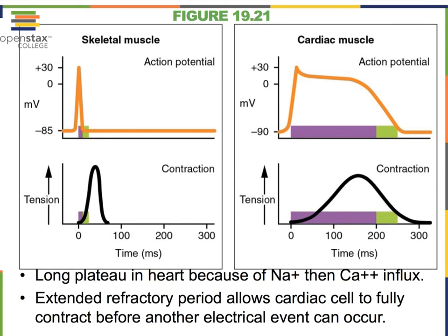In cardiac muscle cells, contraction occurs well in the middle of the action potential because calcium ions are provided not just by the sarcoplasmic reticulum but also flow in from the extracellular fluid. Because of that calcium flowing in directly from the extracellular fluid to the troponin complexes, the filaments begin to slide much earlier. In skeletal muscle, calcium can only come from the sarcoplasmic reticulum, so the action potential must finish first.